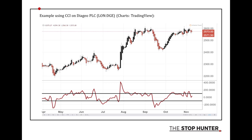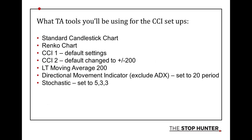Here's an example of the CCI in action. We have a chart of Diageo PLC, a UK company. On the bottom is the CCI indicator, and you can see the two black parallel lines marking the plus and minus 100 zone. You can see how the price action has dipped above and below those levels a few times over several months — that gives you an idea of what it looks like and how it relates to price action.